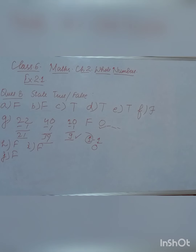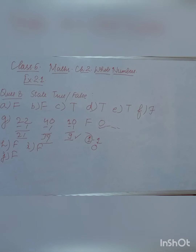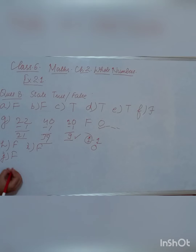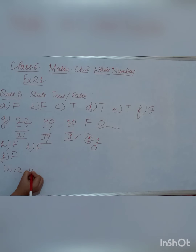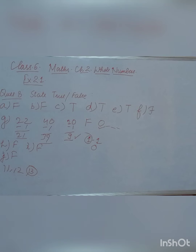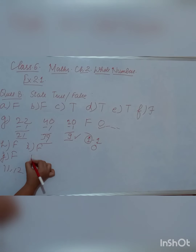The K part says: 'The whole number 13 lies between 11 and 12.' That is not possible — 13 does not come between 11 and 12. Numbers between 11 and 12 would be fractions, not whole numbers. So this statement is false.